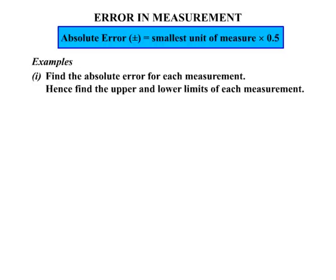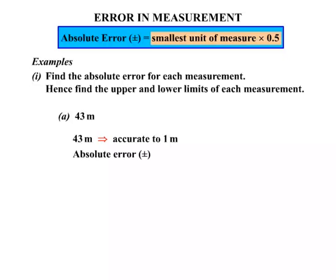We need to find the absolute error for each measurement and find the upper and lower limits. Consider firstly 43 metres. 43 metres is accurate to 1 metre, so the absolute error, plus or minus, is the smallest unit of measure multiplied by 0.5 — that's 1 metre times 0.5, which equals plus or minus 0.5 metres.